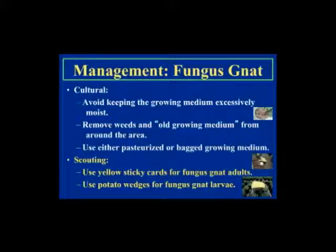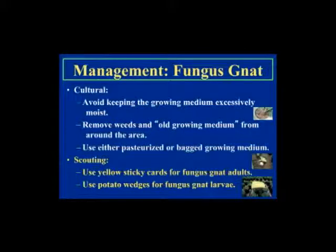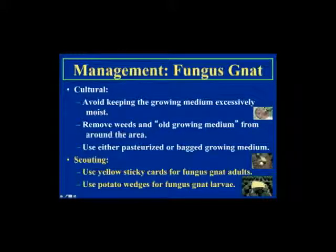For fungus gnat management, cultural and sanitation practices include keeping your growing medium a little on the drier side. Remove weeds, as they create an extra-moist environment. Use pasteurized or sterile growing medium when possible. For scouting, use yellow sticky cards for adults placed near the growing medium — not above the crop canopy — because fungus gnat adults don't fly well. For larvae, use potato disc slices about a quarter inch thick inserted into the growing medium for 48 hours; if larvae with black head capsules are feeding underneath, you have larvae present.